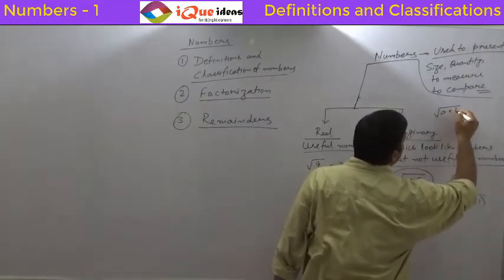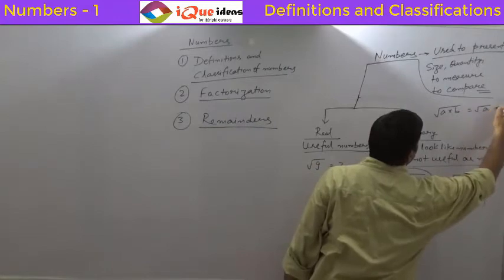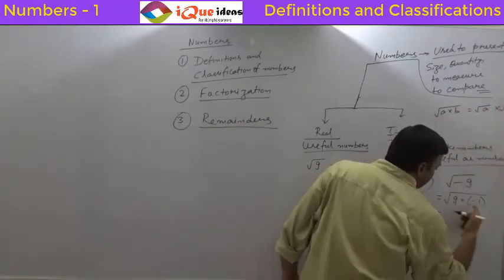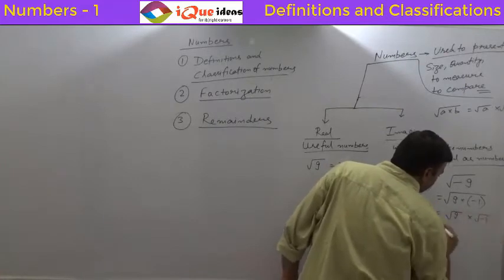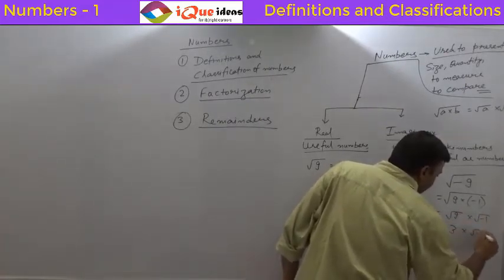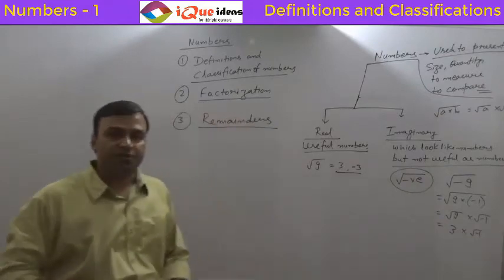Root of a into b can be written as root of a into root of b. So we can take them as root 9 into root of minus 1. Root of 9 is 3. Root of minus 1 just as it is because you cannot find root of minus 1.